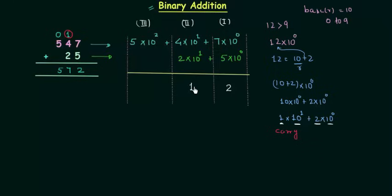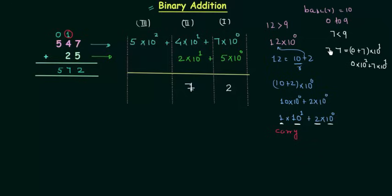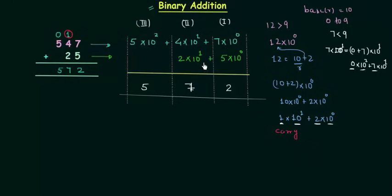4 plus 2 is 6, and we already have 1 carry, so 6 plus 1 is 7 in the second column. 7 is less than 9 so it is a valid decimal digit and we have carry equal to 0, giving us sum as 7. Carry falls in the 10 raised to power 2 column, where we only have 5. 5 plus 0 is 5 with no carry, so we write 5 in the third column and the answer is 572 — same as before, but now we know why carry is generated and transferred to the next position.